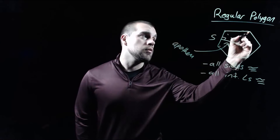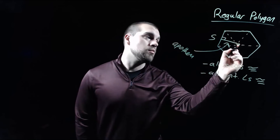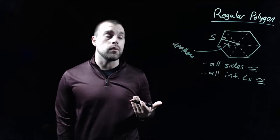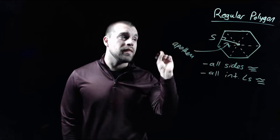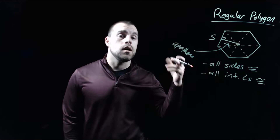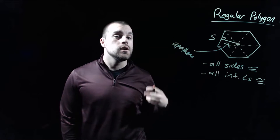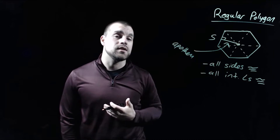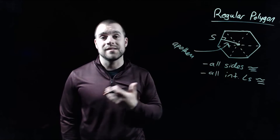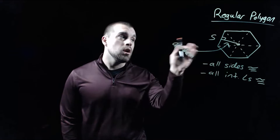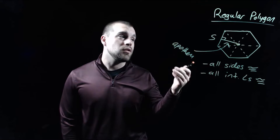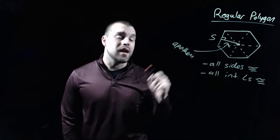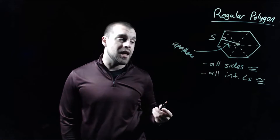All of those triangles, since this is a regular polygon, are going to be congruent. So what we're going to do is find the area of one of those triangles. Remember the area formula for a triangle is one half base times height, and the base and the height have to be perpendicular. In this case, the values that we're dealing with are that side length S and then the length of that apothem.